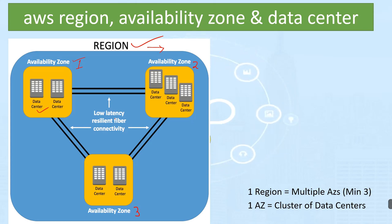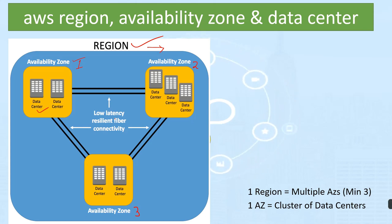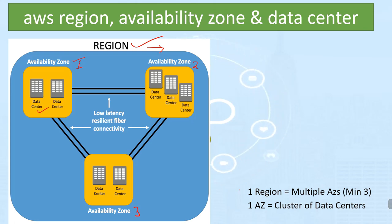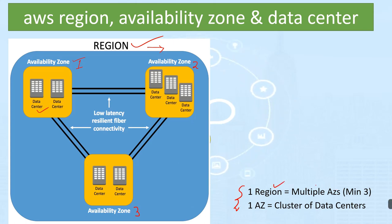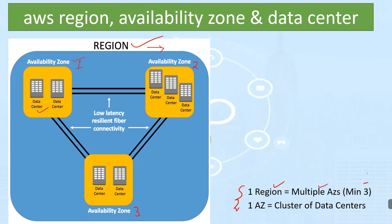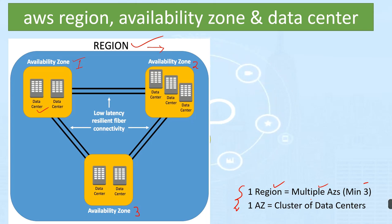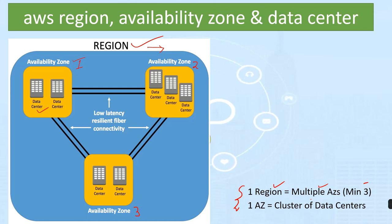There are 80 availability zones currently in AWS. The main important thing is: inside one region, multiple availability zones are there. The minimum number of availability zones is three. And inside one availability zone, AWS keeps a number of data centers.